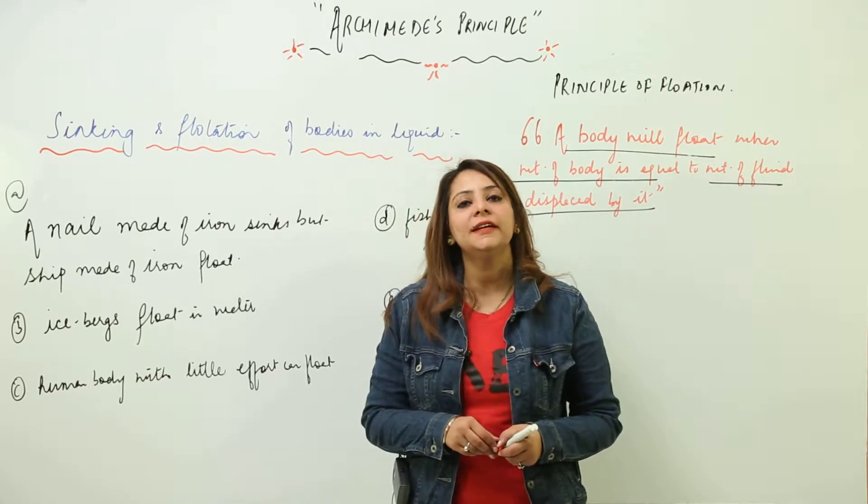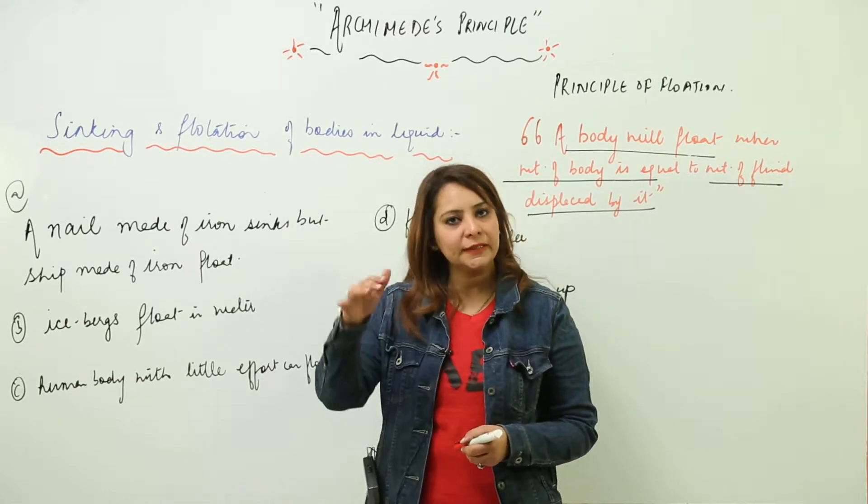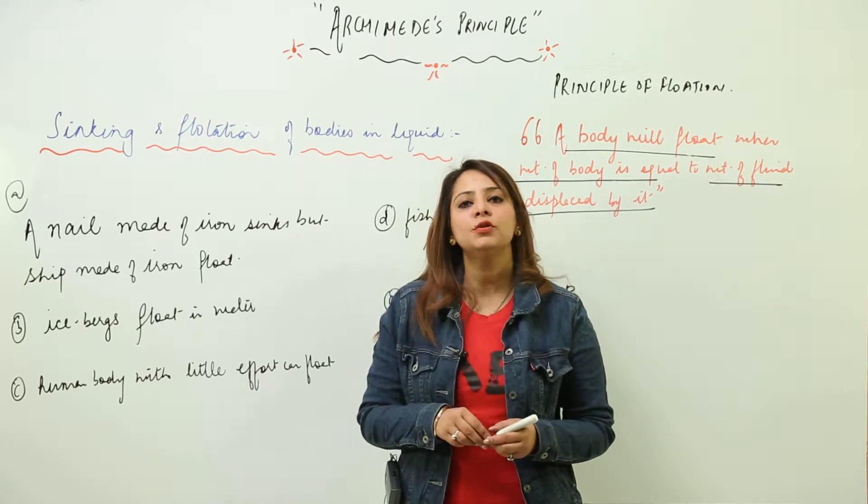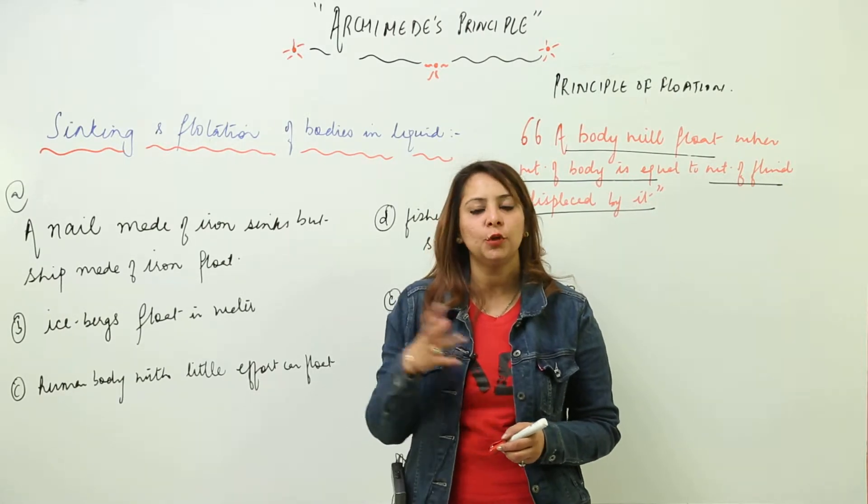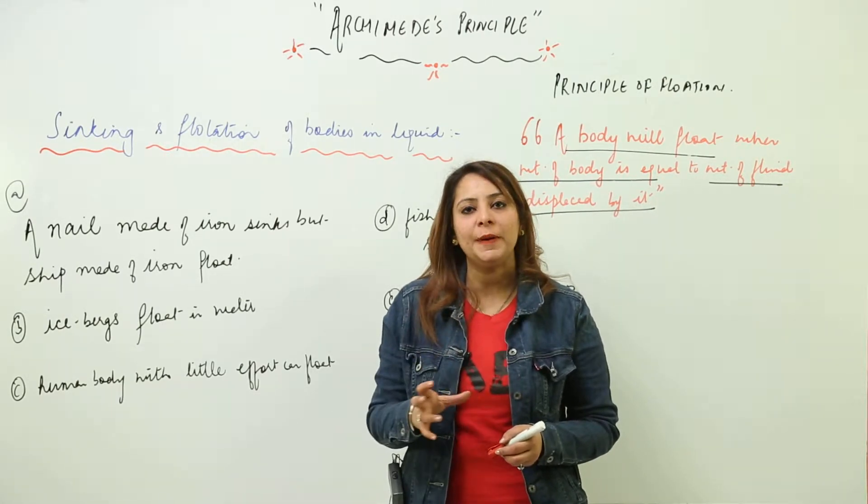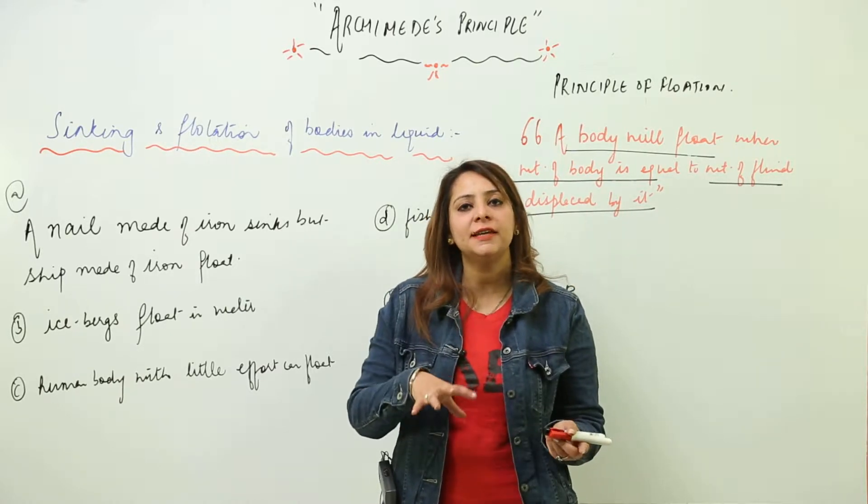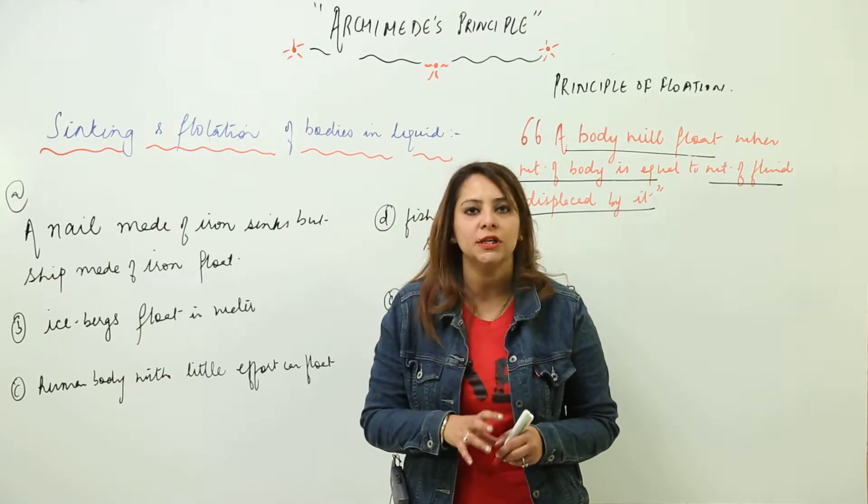The density of the iron nail is quite high compared to water, so it sinks down. But the ship is made of the same material. The ship actually has a hollow space at the bottom. That hollow space decreases its density and its density becomes equal to the density of the fluid. That is why it can float in water.